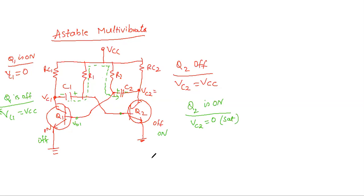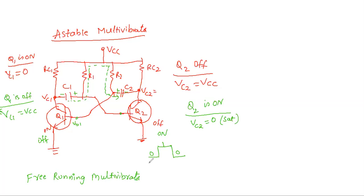Here you can see the Q2 state: first it is in OFF condition, then it enters ON state, then back to OFF state — this is a continuous process. That is why it is called a free-running multivibrator — we are not giving any triggering pulses to change the state of the transistors. T1 is the time period for one state and T2 for the other. One complete OFF and ON cycle is the time period T, where T equals T1 plus T2.